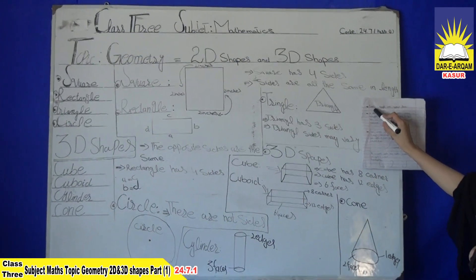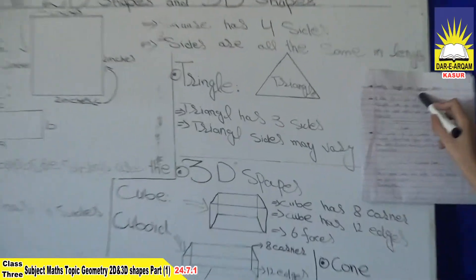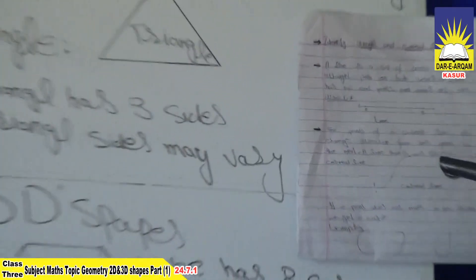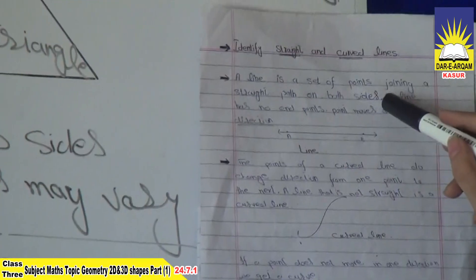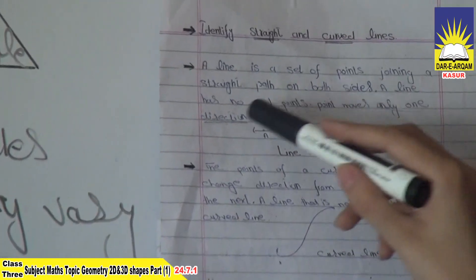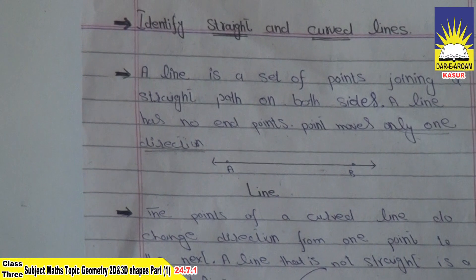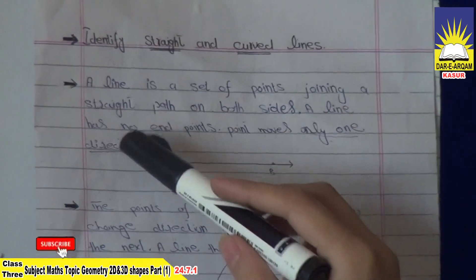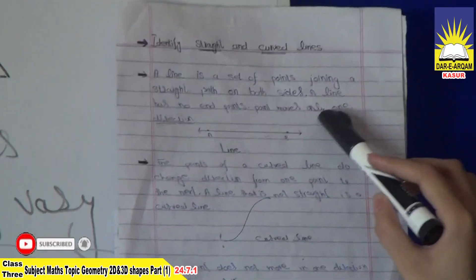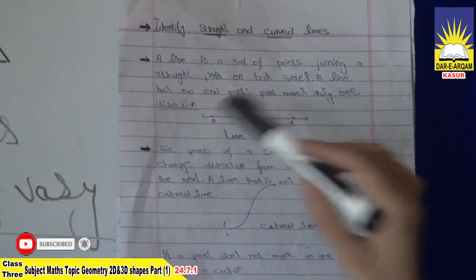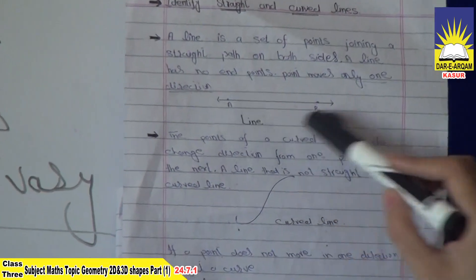Next, identify straight and curved lines. A line is a set of points joining the straight path on both sides. A line has no end point and points move in only one direction. This is called a line.